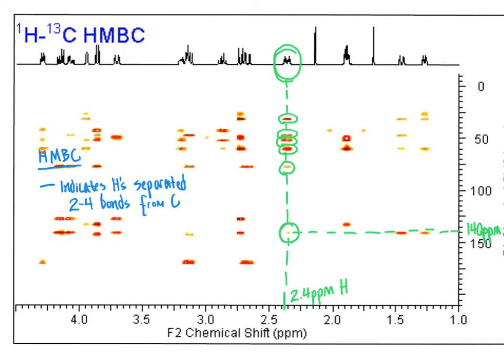In HMBC, the HM stands for multiple, indicating that we are looking at hydrogens separated by multiple bonds — two to four bonds — from carbon atoms. So we're not going to see in the HMBC experiment which hydrogens are directly connected to which carbons. Instead, we only see the ones that are two to four bonds away, and that helps us in combination with COSY, HSQC, the 1D proton, and the 1D carbon-13 experiments to determine the complete chemical structure of the molecule.